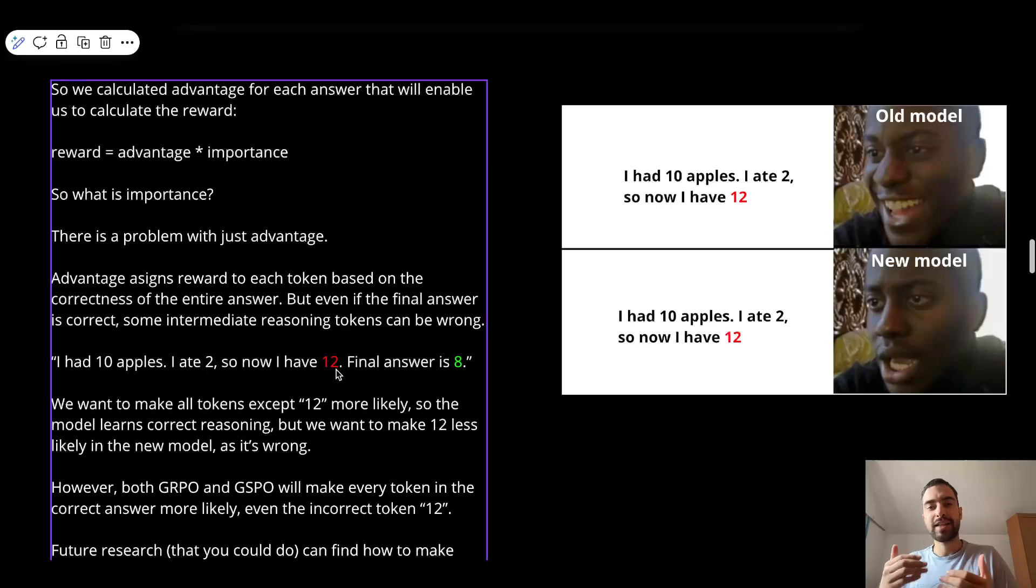So for future research that maybe even you can do, you can figure out how to detect these wrong reasoning steps and make them less likely, even though the other ones you're gonna make more likely. But it's not all doom and gloom. Both GRPO and GSPO can detect something wrong here. And this is where they start to diverge. So first we will understand GRPO and then this is from R1 and then GSPO, which is even simpler. So GRPO will find out that this token is weird. So it will actually reward it less, reinforce it less than the rest of the tokens.